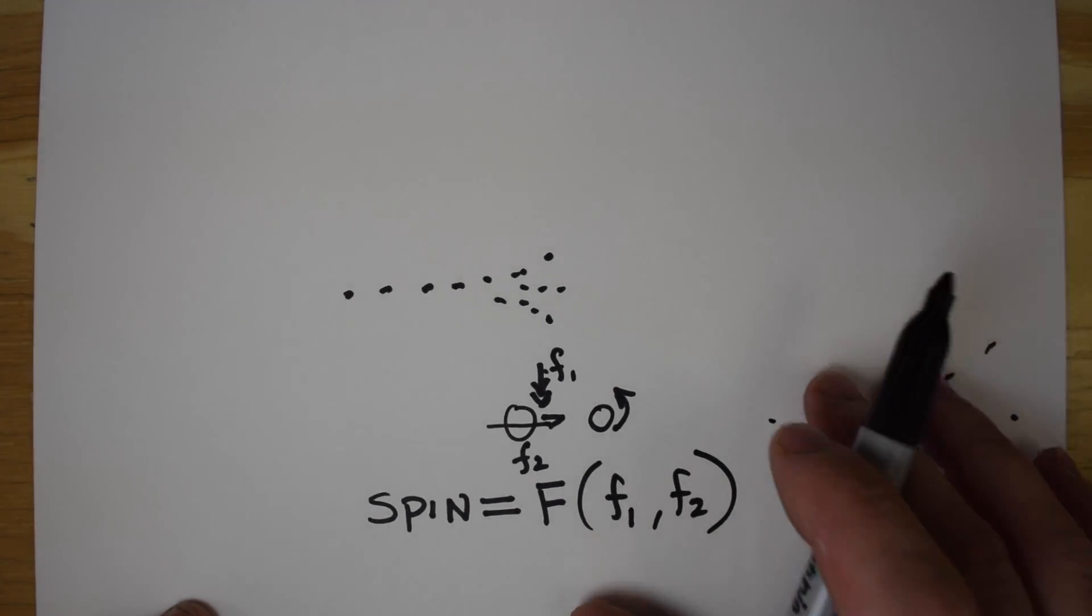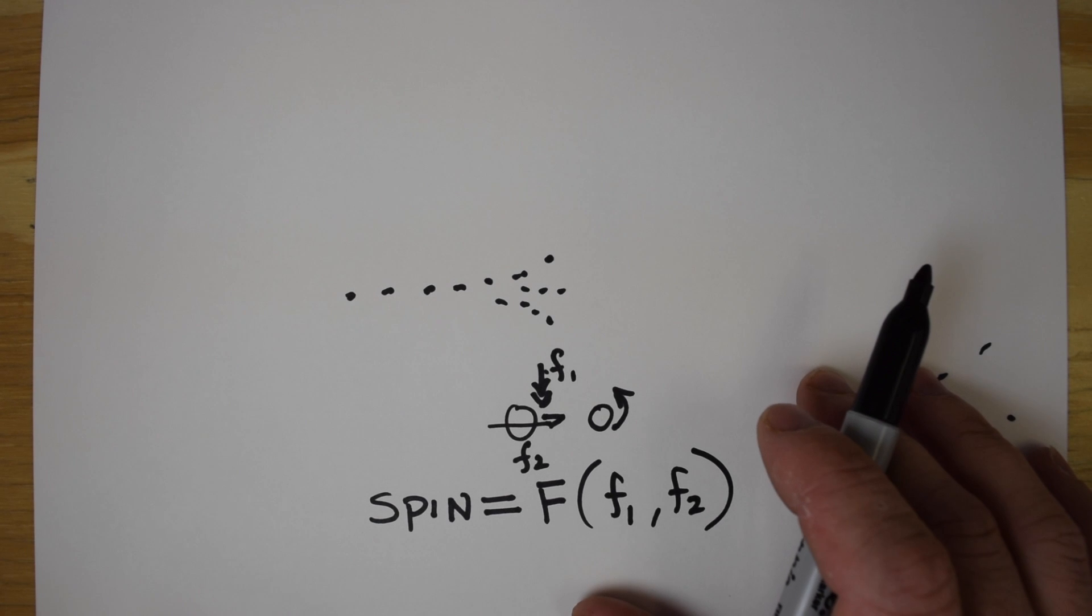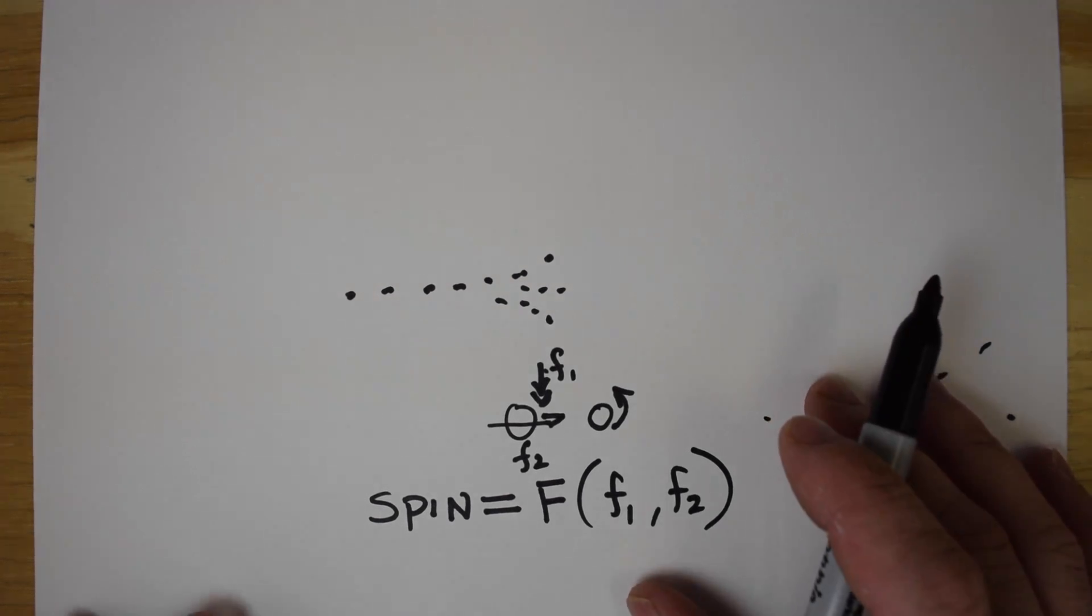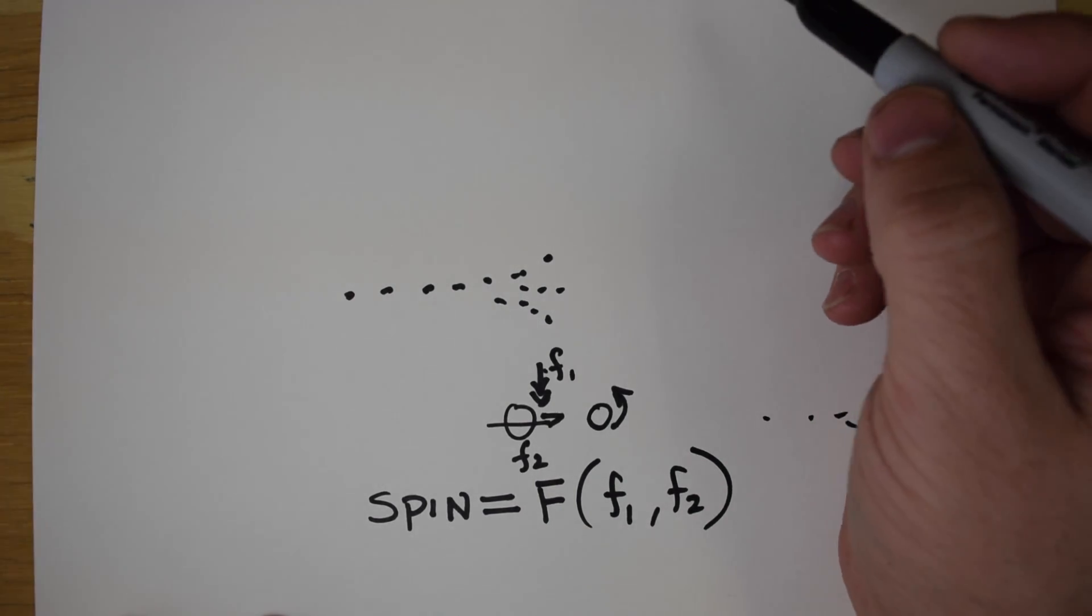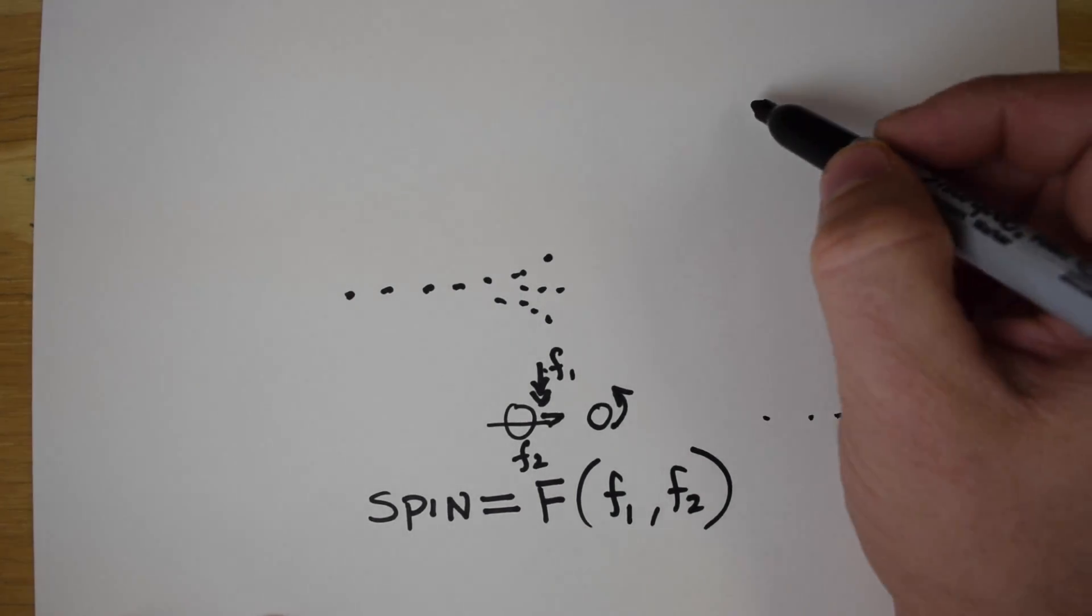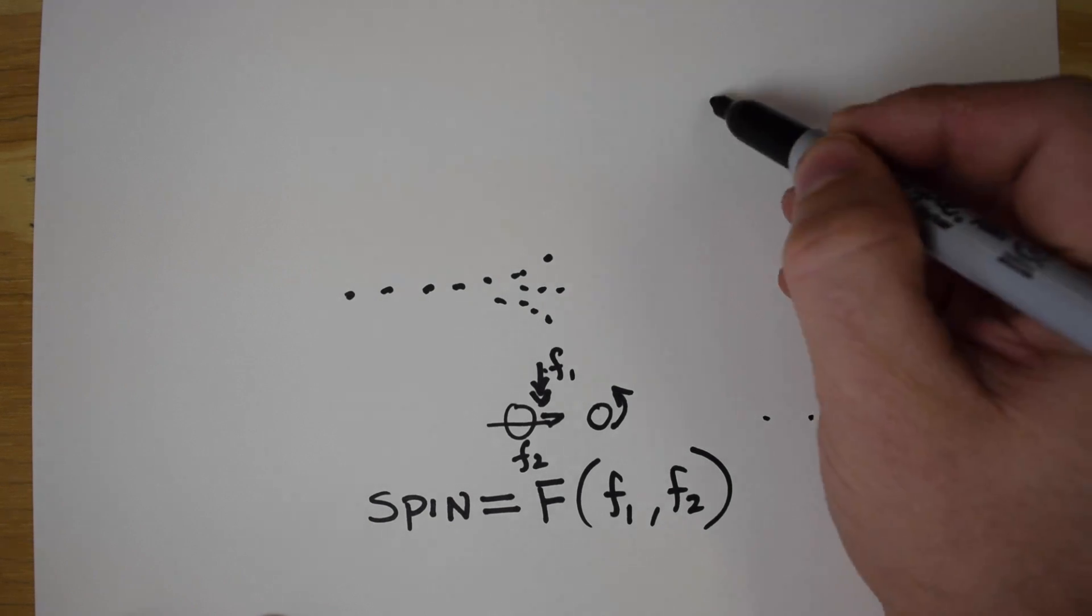So why does that matter? When you have an open bolt system, there's a parameter that is more critical than it is with a non-open bolt system or a closed bolt system. That parameter is the hop-up bucking.